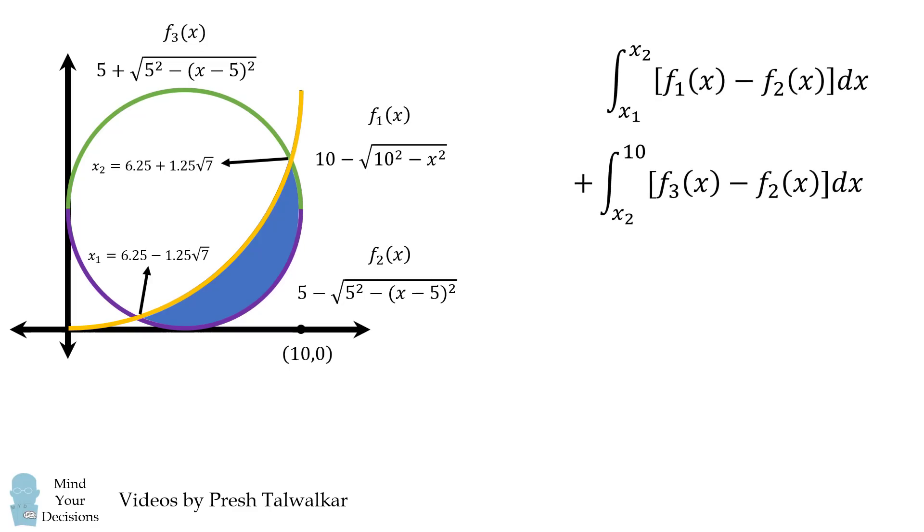Now with these integrals we can numerically calculate and get that the answer of one of these blue segments will be approximately 14.638. We want the area of two of them, so we multiply by 2 and again we get 29.276. So it's a pretty neat problem and I really like that you can approach it both using trigonometry and using calculus.